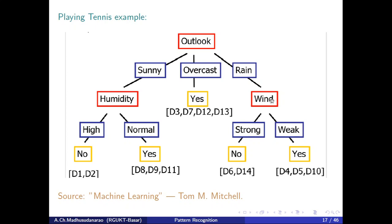At the same level, for the sunny branch I ask about humidity, and for the rain branch I ask about wind. You can try to interchange both — instead of asking about humidity for the sunny branch, ask about wind, and see whether you get all pure leaf nodes or not.